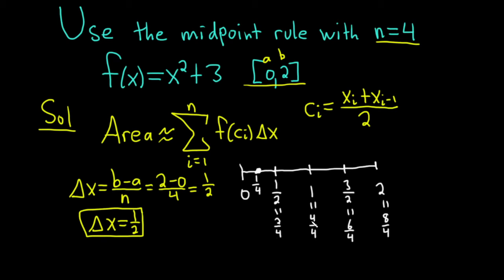Right? Because two fourths is one half. Four fourths is one. Six fourths is three halves. And eight fourths is two. And so the midpoint here will be three fourths. Midpoint here will be five fourths. And the midpoint here will be seven fourths. Right? It's right between six and eight, it's seven fourths. Right between four and six, it's five fourths. Right between two and four, it's three fourths. Right between zero and two, it's one fourth. So these are going to be your c sub i's.